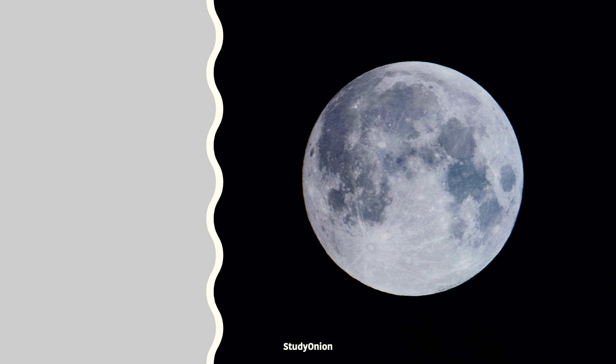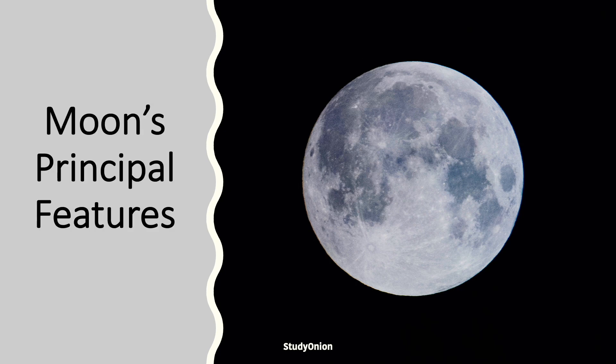Let's continue on to look at the moon's principal features. The names of four craters of the moon originate from Aristarchus, Kepler, and Copernicus — these are all different astronomers who made significant astronomical discoveries, and their discoveries will be covered more in following videos.